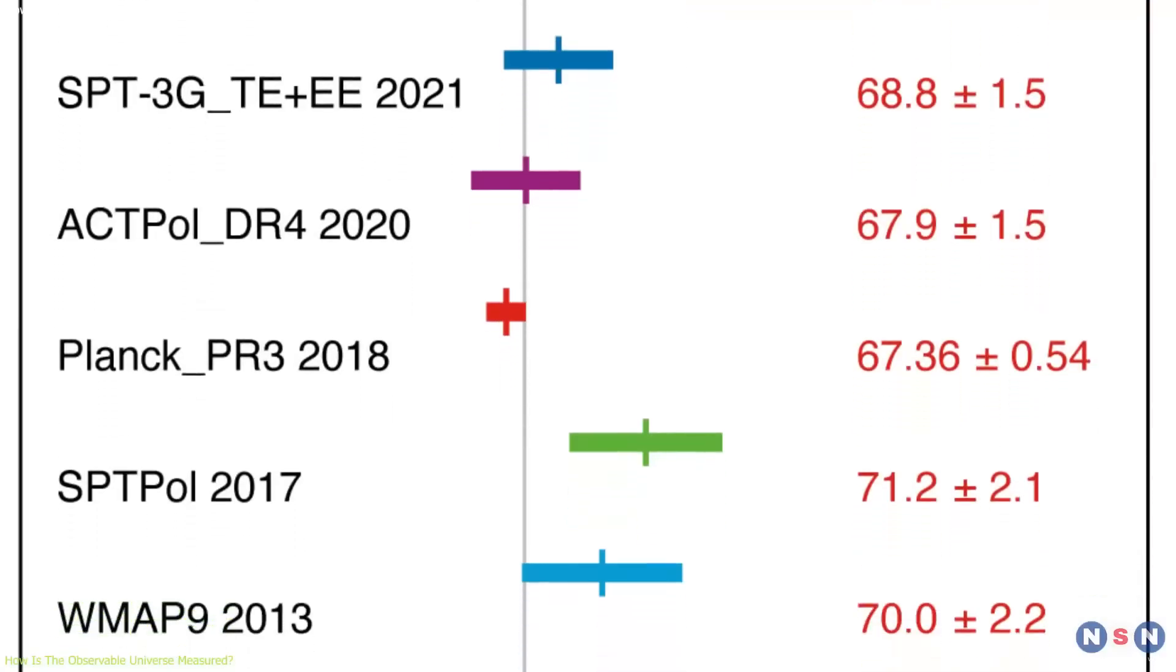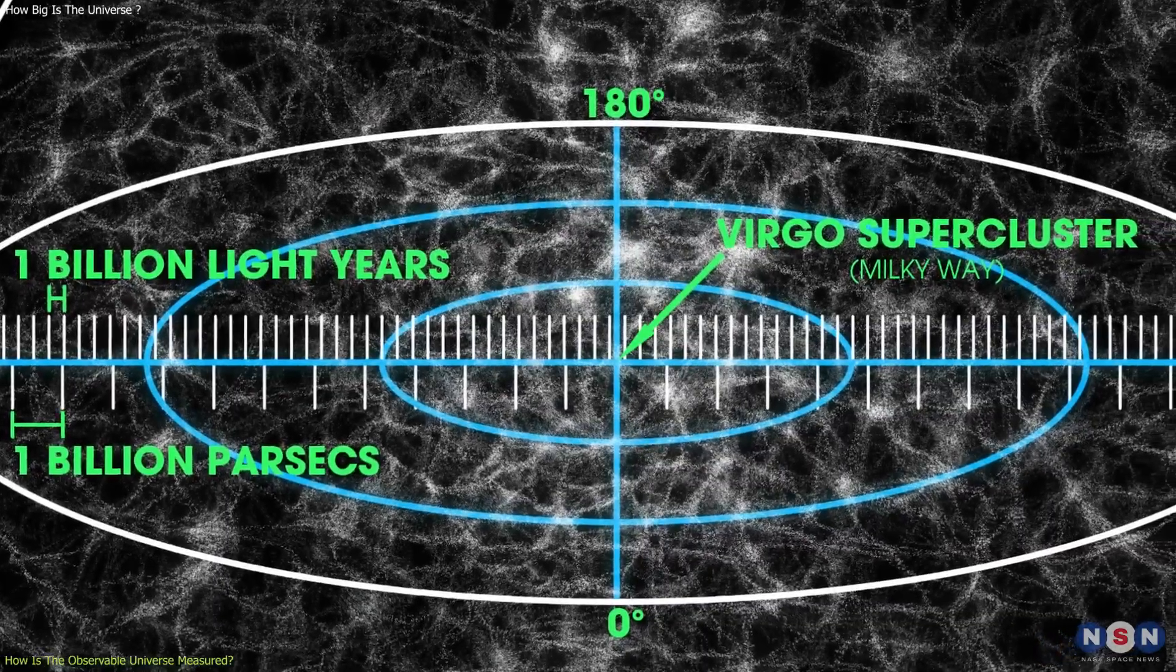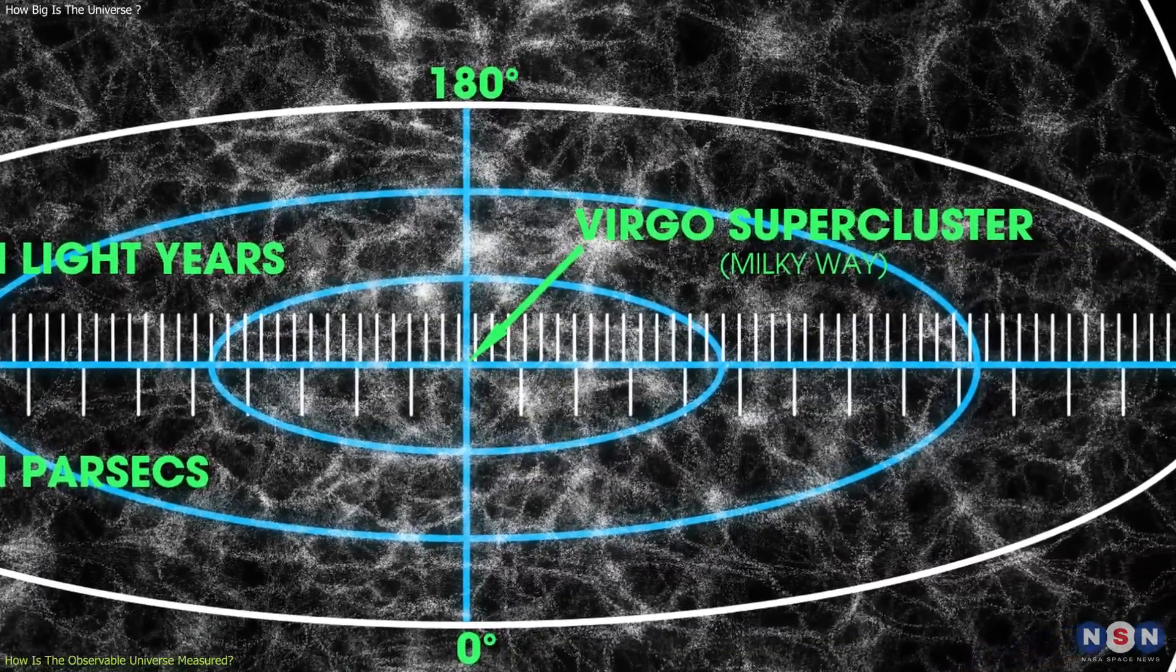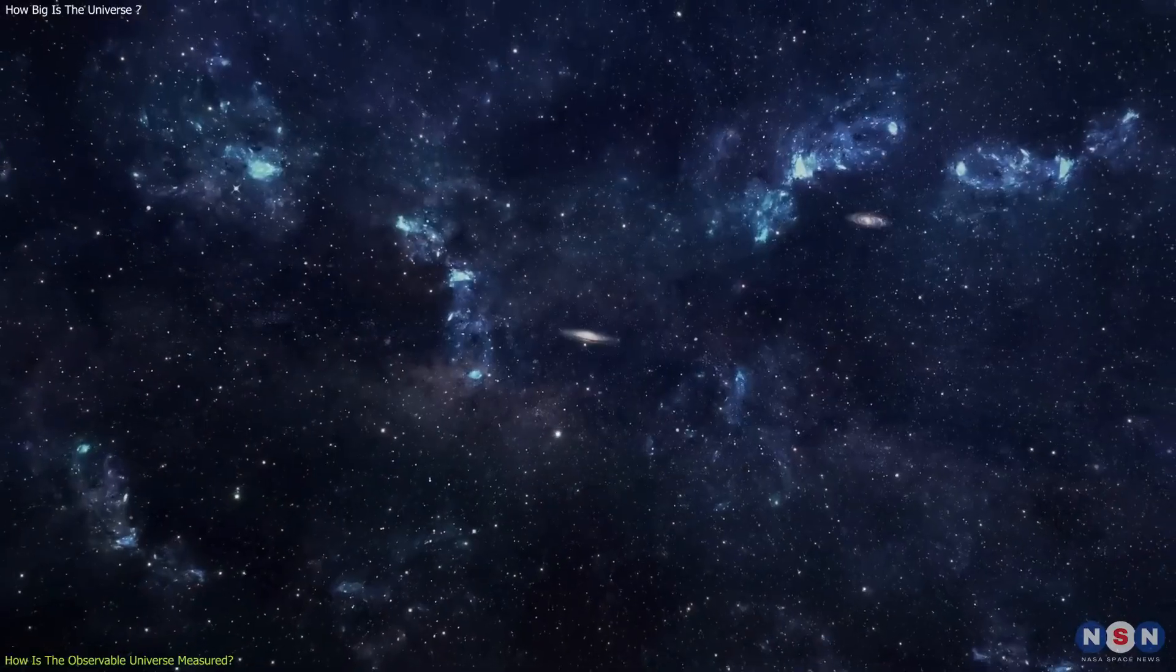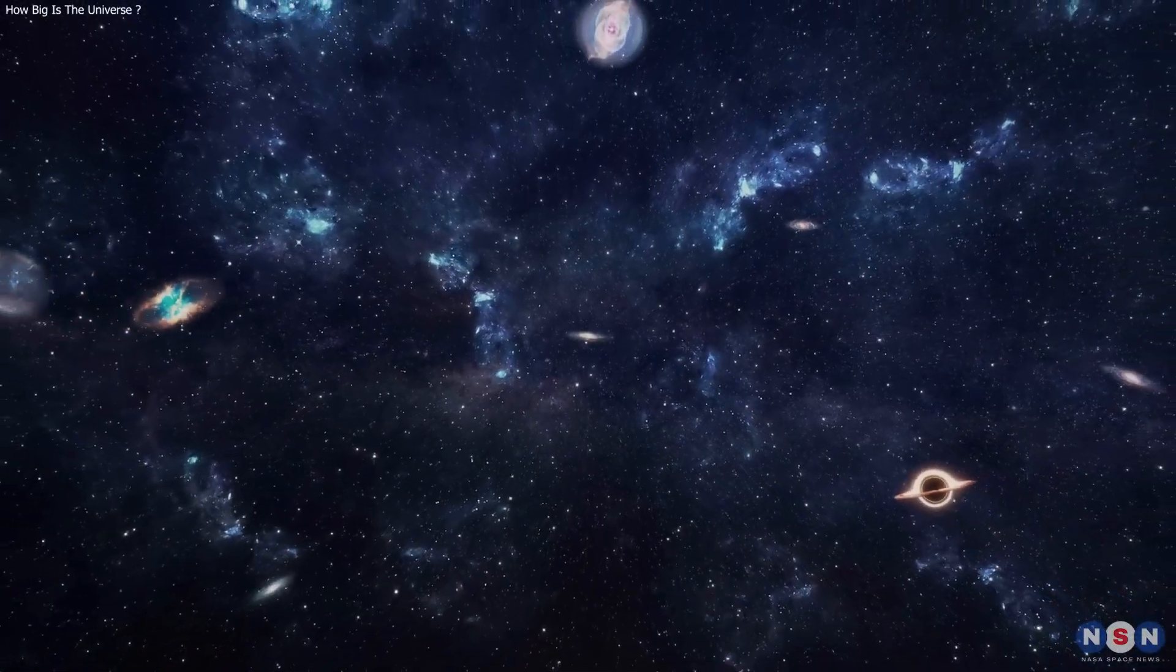So, depending on the value of the Hubble Constant, we can get different estimates of the radius of the observable universe. And that's exactly what happened in the paper, which we will discuss in the next section.